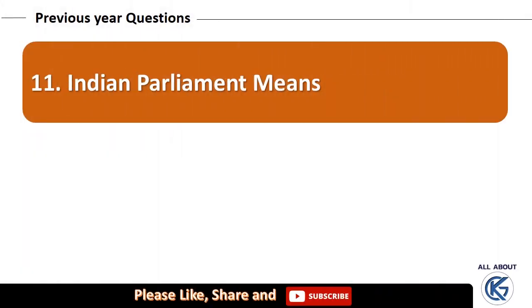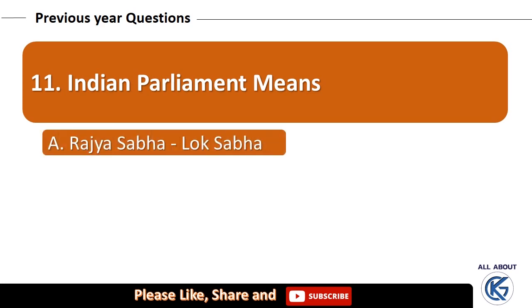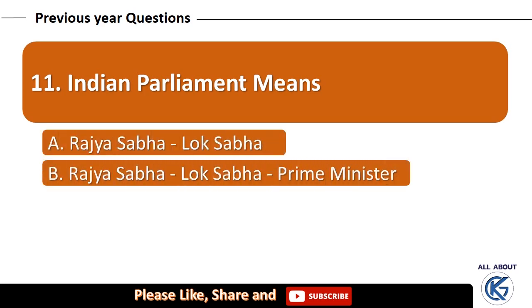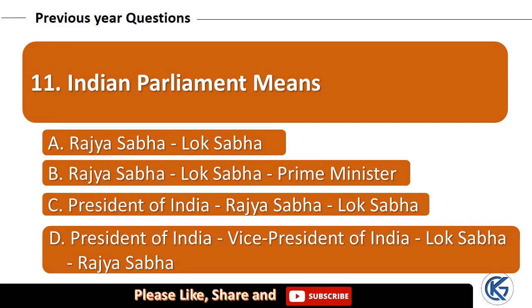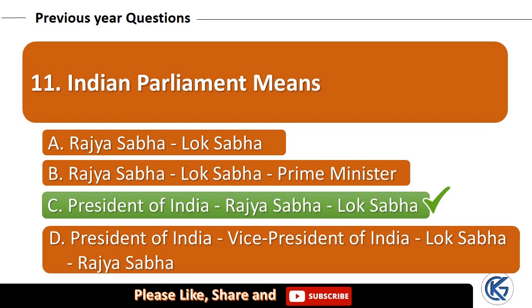Indian Parliament means: Rajya Sabha and Lok Sabha; Rajya Sabha, Lok Sabha, and Prime Minister; President of India, Rajya Sabha, and Lok Sabha; or President of India, Vice President of India, Lok Sabha, and Rajya Sabha? The right answer is President of India, Rajya Sabha, and Lok Sabha.